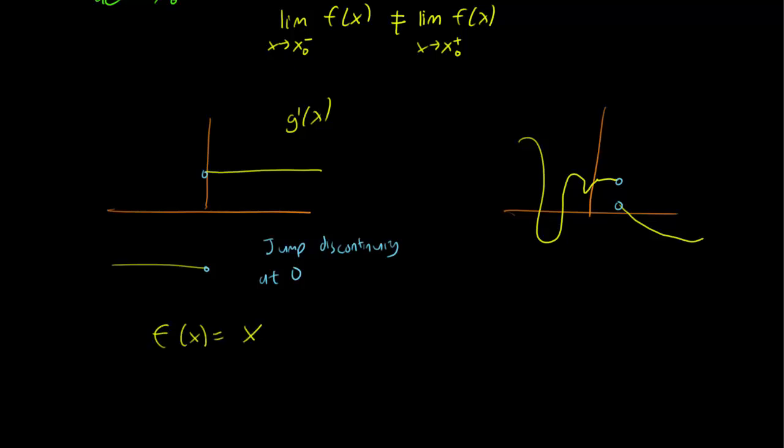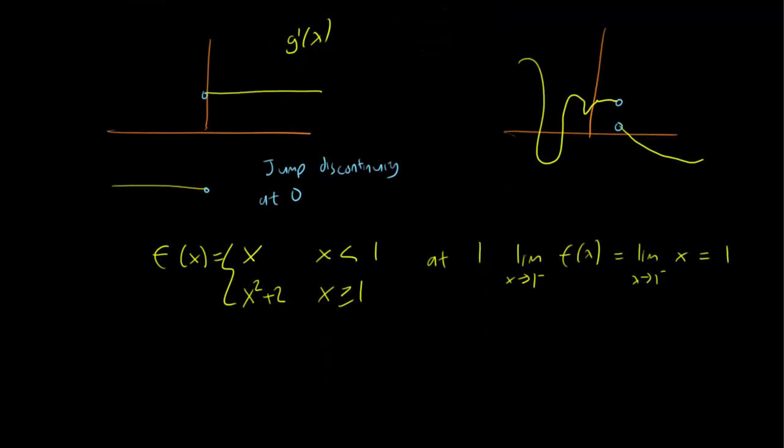Here's an example. So fx equals x for x less than 1. We can say that fx is equal to x squared plus 2 when x is greater than 1. So you can see, at 1, the limit from the left hand side is going to be limit of fx equals 1. But the limit from the positive direction is going to be equal to limit of x squared plus 2, and this is equal to 3. So you see that the limit of fx from the left and the right don't agree, and therefore there's a jump discontinuity at 1.